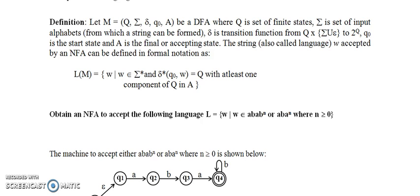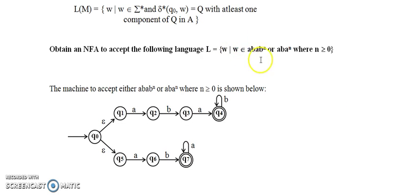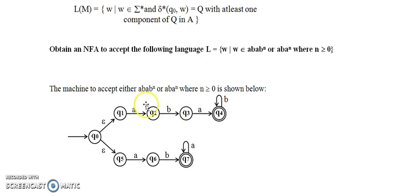The language accepted by NFA is also a regular language. We will see one example: for the given language L where W belongs to AB* or ABA*. This is the NFA for the given language. Why is it an NFA? Because from state Q0 for input alphabet epsilon I have two transitions. In NFA it is not necessary to show all transitions from each state. For state Q1, I have shown the transition only for input alphabet A, not for B. Similarly, for Q2 I have shown only for B, not for A. In DFA I have to show the transition function for all possible input alphabets from each state, but in NFA it is not necessary.